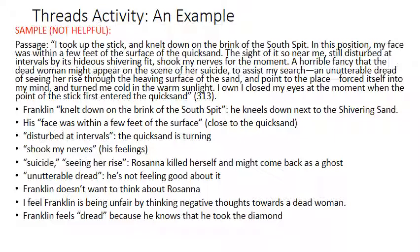'Unutterable dread — he's not feeling good about it' — this is obvious. 'Franklin doesn't want to think about Rosanna' — no words or phrases are connected to this claim. 'I feel Franklin is being unfair by thinking negative thoughts towards a dead woman' — that's a personal feeling, appropriate for a reading journal but not literary analysis. And finally: 'Franklin feels dread because he knows he took the diamond' — but does he know that yet? He's looking for the case in the shivering sand; he hasn't found the nightgown with his name on it yet. This last bullet point is inaccurate.